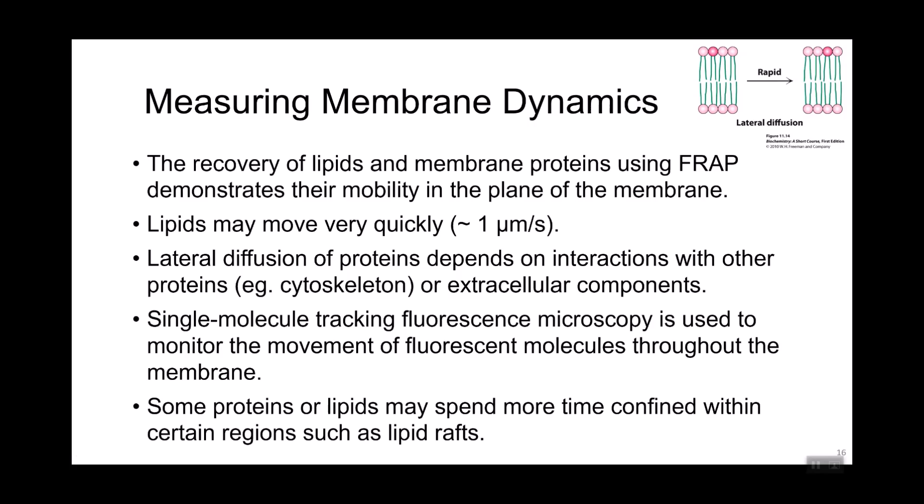Lipids can actually move quite rapidly — about one micrometer per second — and mammalian cells can be anywhere from one to a hundred micrometers in width, so a lipid could theoretically cross the cell in seconds. Proteins are quite a bit larger than lipids and can interact with other proteins on either side of the membrane, such as the cytoskeleton on the inside, which can slow their rate of diffusion. A variation on FRAP is single molecule tracking, where you control the number of fluorescently labeled molecules — for example, by creating a fusion protein with a fluorescent tag — to better understand how individual molecules move rather than averaging out results from many labeled molecules.